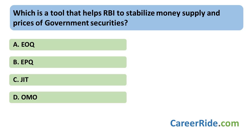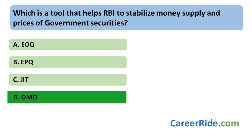The tool that helps RBI to stabilize the money supply and the prices of government securities in India is OMO — Open Market Operations. Open Market Operations is an instrument of the monetary policy. It involves buying or selling of government securities from or to the public or banks. RBI sells government securities to control the flow of credit and buys government securities to increase the credit flow. Open Market Operations makes the bank rate policy effective and maintains stability in the government securities market.